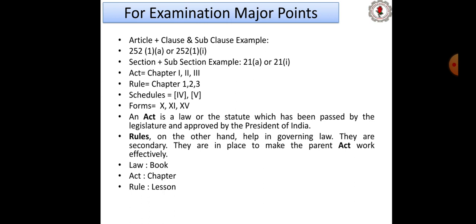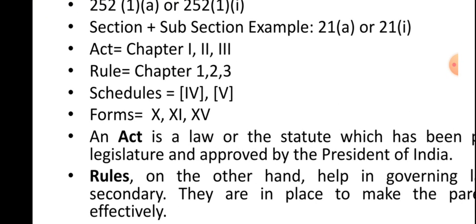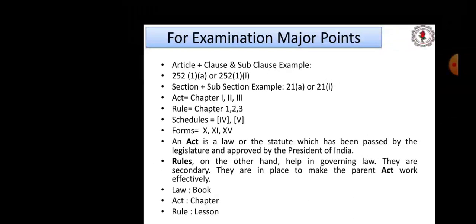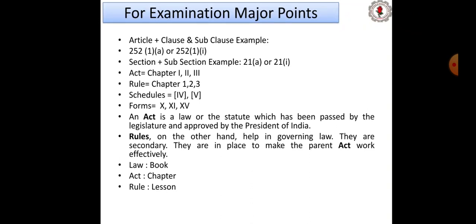For example, if Article 252, Clause 1 is written, then if there are other digits — alphabetically, numerically, Arabic or Roman — these are all called clauses. Sections have subsections and subordinate sections. Acts have chapters in Roman numerals, and rules have chapters in numerics, plus schedules and forms. An Act is what the Legislature and President have passed — Parliament discusses both Houses, then it gets the President's signature and is implemented.